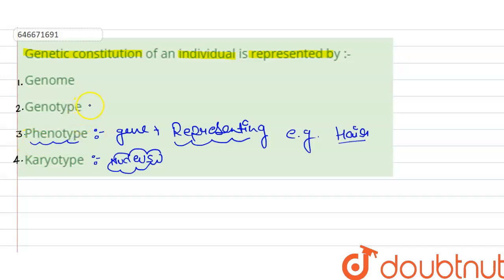And if we see the second option, that is genotype. Basically genotype meaning is the character or the gene which are present on the chromosome as a single or as a pair. So this is known as the genotype and this is the genetic constitution of an individual. So our right answer for this question is option number second, that is genotype.